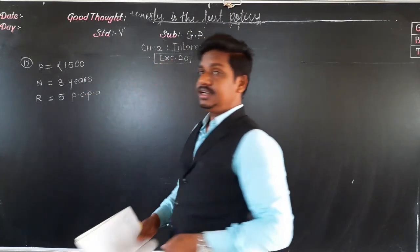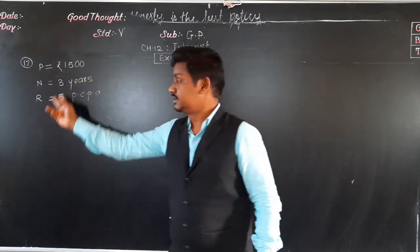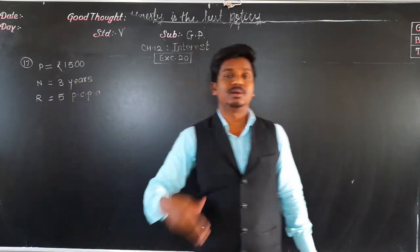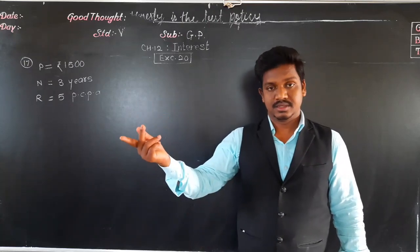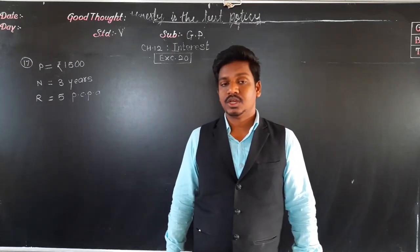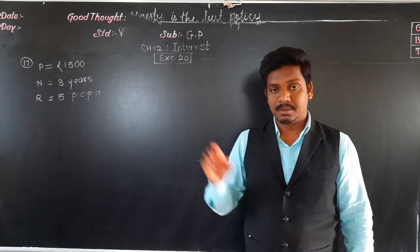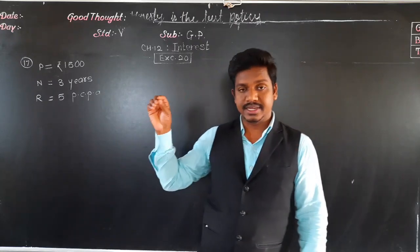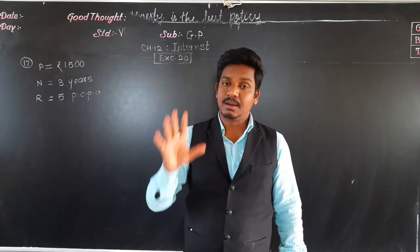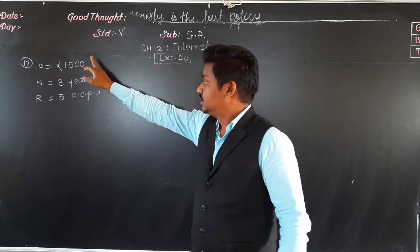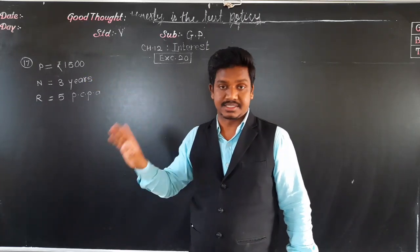At the end of 3 years, how much amount do we have to repay to the bank? Amount means the amount at the end of the period which we have to pay. That amount is principal plus interest.